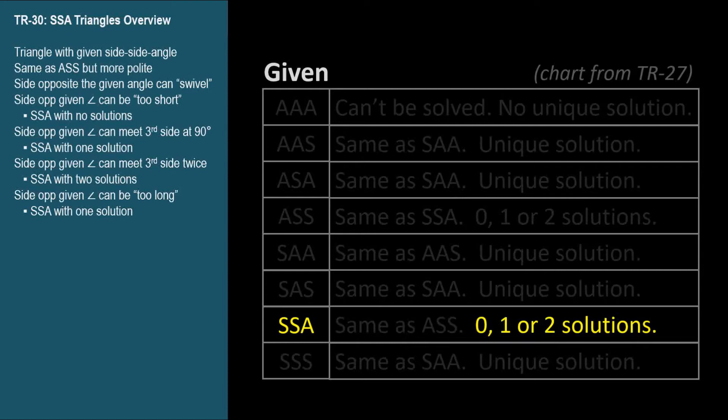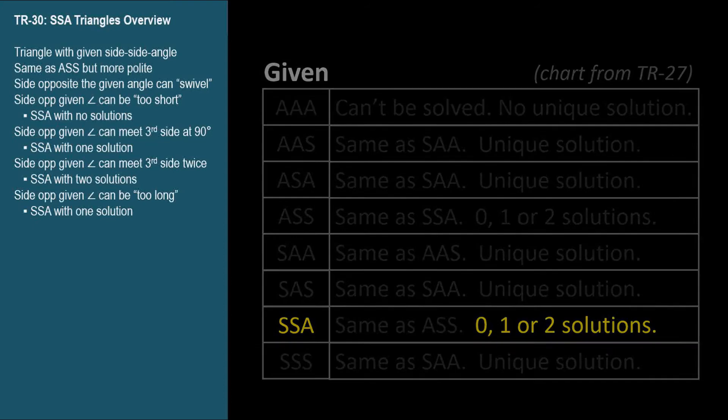We're given two sides and an angle, but not the angle between the two sides. This configuration can have zero, one, or two solutions. Here's how that happens.